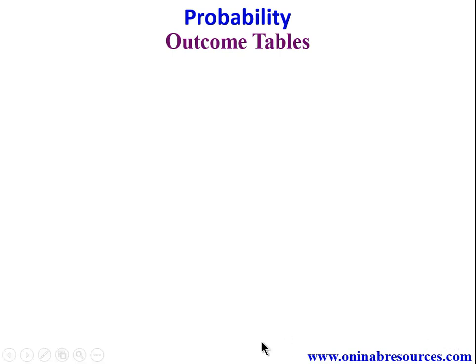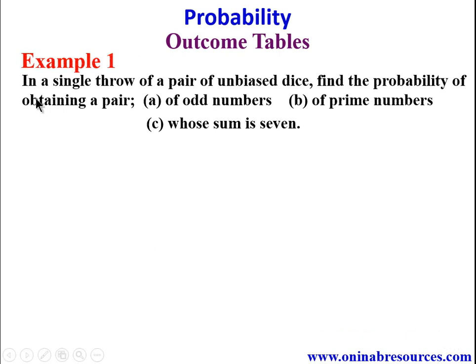Hello, welcome to this tutorial on probability. If you are joining us now, check the description section of this video on our YouTube channel to get the links to other videos on probability. In this video we'll be looking at outcome tables. Our first example: in a single throw of a pair of unbiased dice, find the probability of obtaining A) a pair of odd numbers, B) a pair of prime numbers, C) a pair whose sum is seven. We are going to create an outcome table.